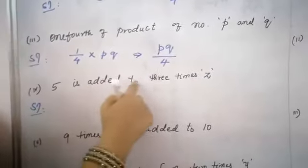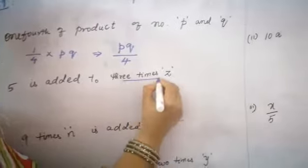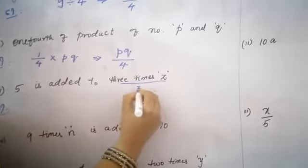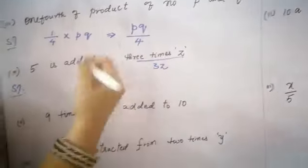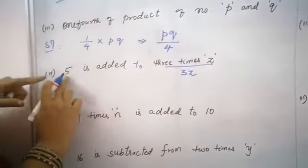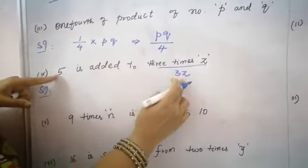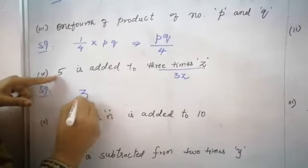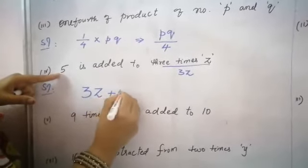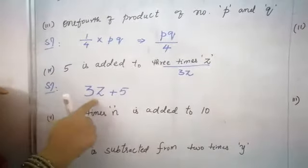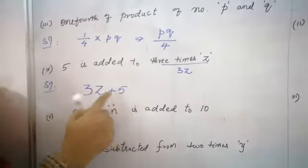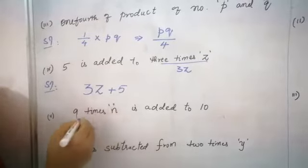Next: 5 is added to 3 times Z. First, 3 times Z becomes 3Z. 5 is added to 3 times of Z, so it becomes 3Z plus 5. This is an expression. The constant will come at the end. So 3Z plus 5.